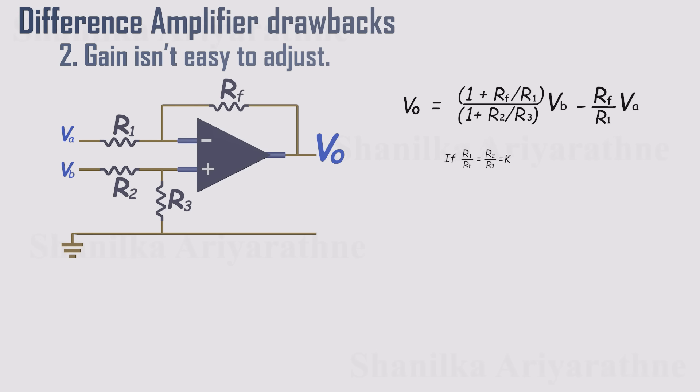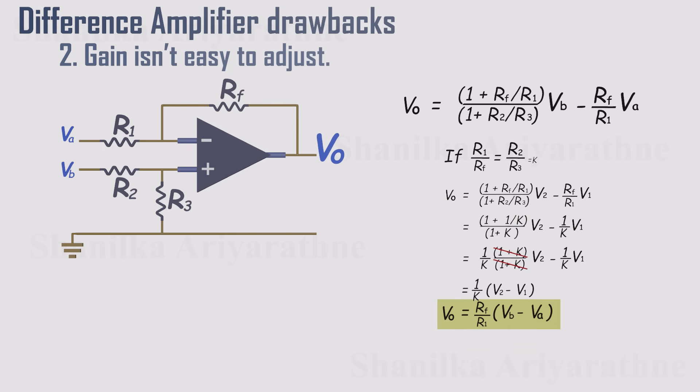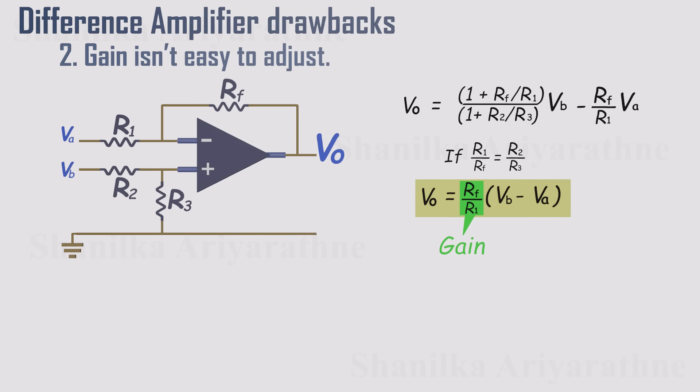But if we set the resistor ratios so that Rf over R1 equals R3 over R2, the messy terms cancel out. And we're left with a nice, clean result. The output equals the gain times the input difference. In that case, the gain is simply Rf divided by R1.